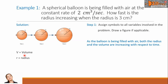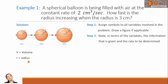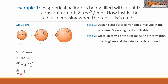We let V be the volume and R equal the radius. Step 2: State, in terms of the variables, the information that is given and the rate to be determined. Analyzing our problem, the 2 cubic centimeters per second is the rate of change of the volume with respect to time, so dV/dt equals 2 cubic centimeters per second. We are required to find the rate of change of the radius with respect to time, so dr/dt equals question mark.